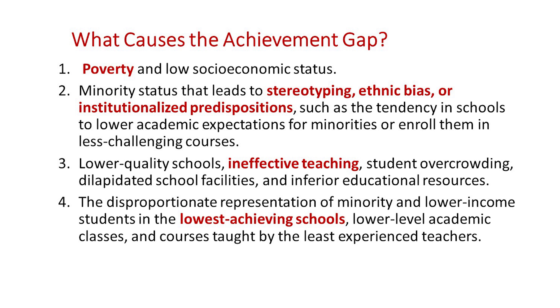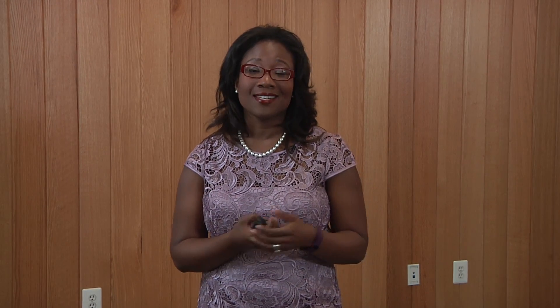Secondly, minority status often causes that — maybe stereotype threat or ethnic biases. We also see causes that relate to ineffective teaching and low-quality schools, many of which tend to be located in the inner city versus suburban schools. There's also a disproportionate representation of minority students in some of the poorest performing schools, which further leads to achievement gaps.